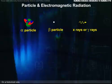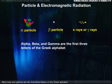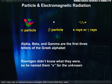On a historical note, the scientists who discovered radiation in the early days were not particularly inventive. Alpha, beta, and gamma are the first three letters of the Greek alphabet, and x-rays were so named because Röntgen didn't know what they were, so he named them X for the unknown.